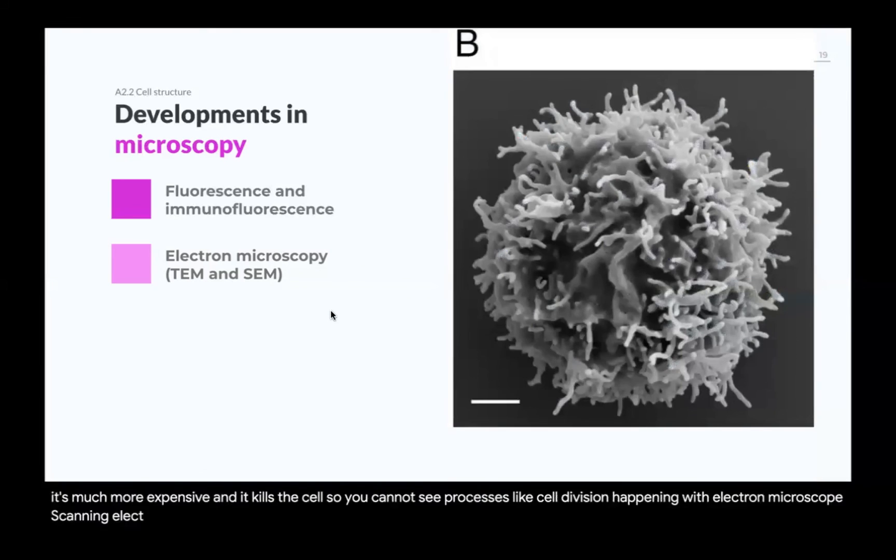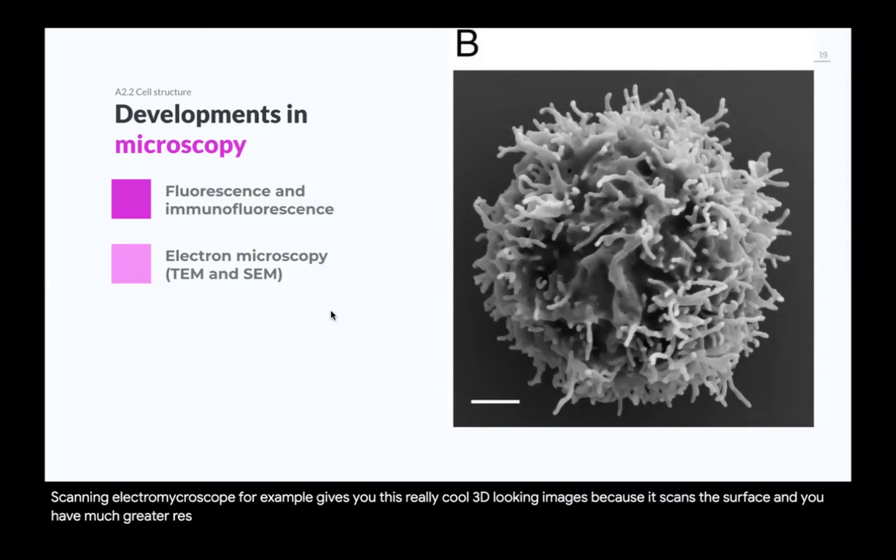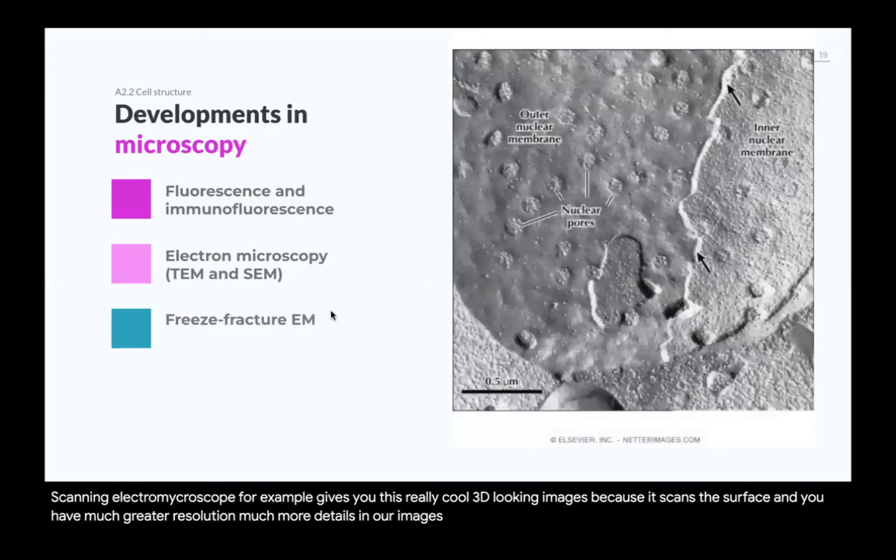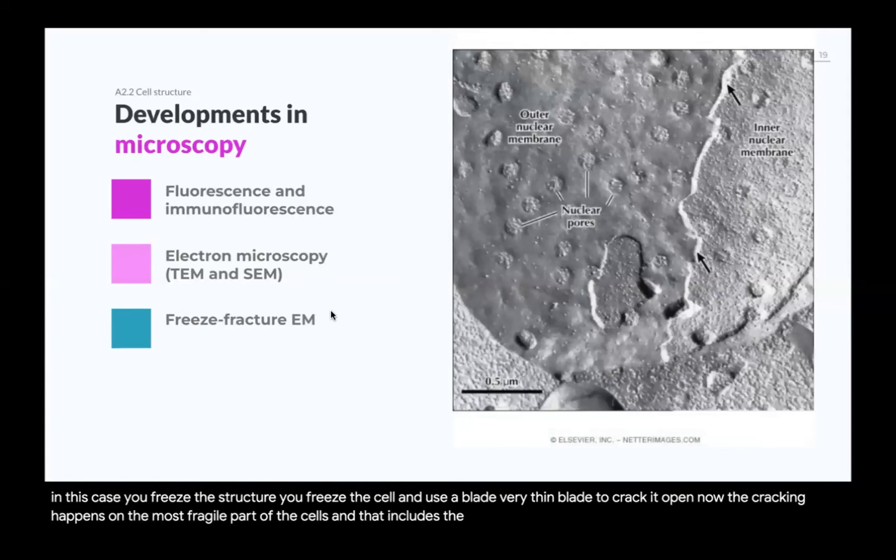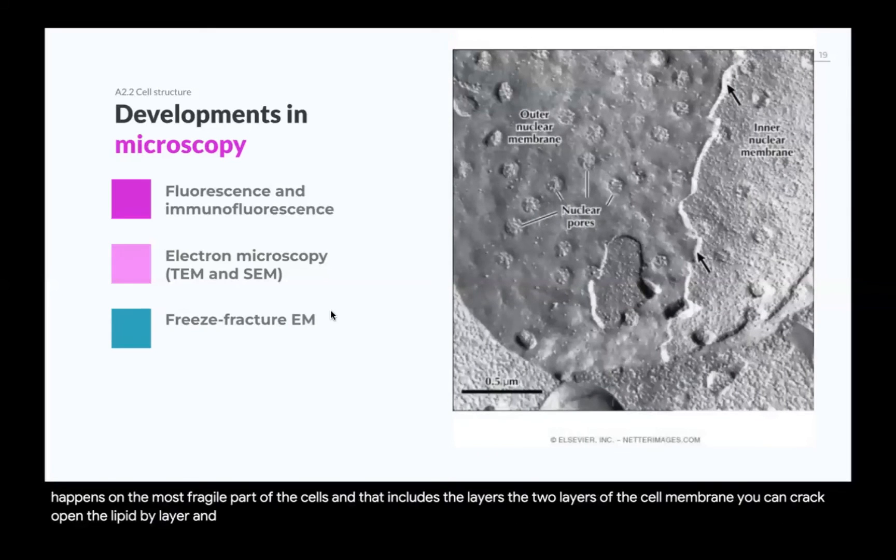Scanning electron microscope, for example, gives you this really cool 3D looking images because it scans the surface, and you have much greater resolution, much more details in your images. You want even more detail, try the freeze fracture electron microscopy. In this case, you freeze the structure, you freeze the cell, and use a blade, a very thin blade, to crack it open. Now, the cracking happens on the most fragile part of the cells, and that includes the layers, the two layers of the cell membrane. You can crack open the lipid bilayer and see the middle of the cell membrane, which is super cool. You can see many details that you could not normally see with that technique.